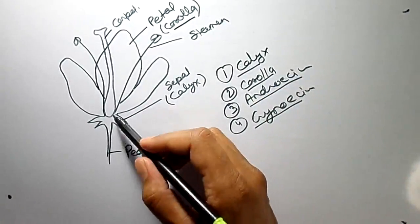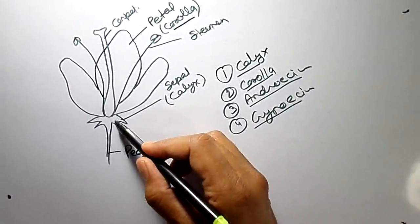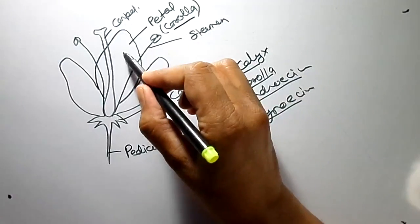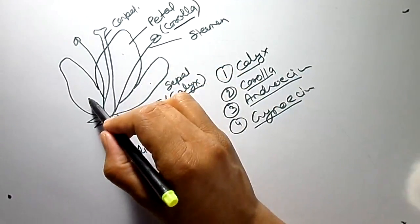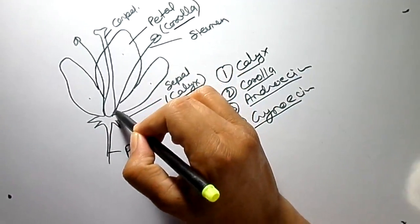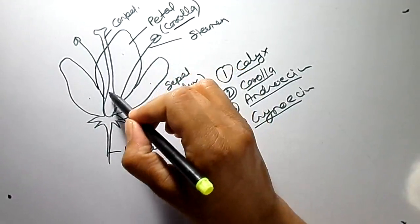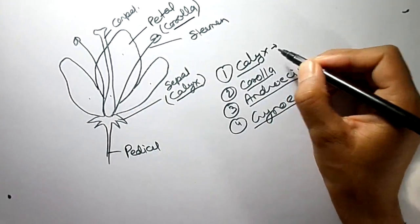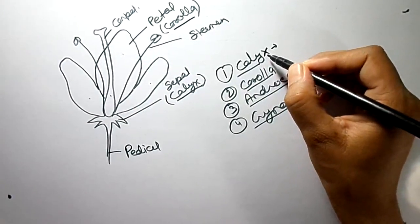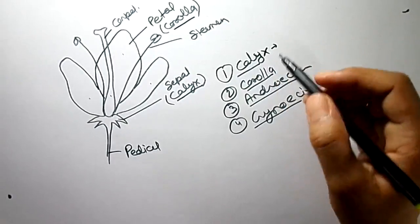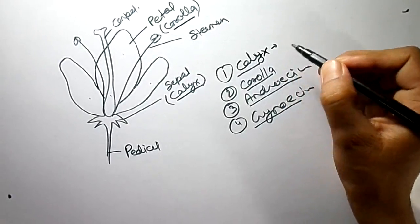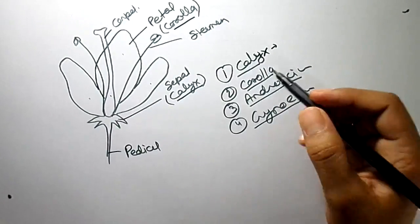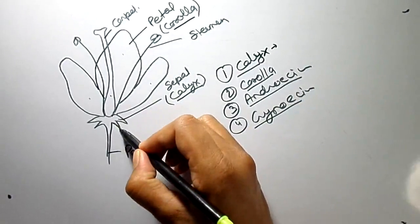So you can see here — this is Calyx. And these parts are called Corolla. This is Androsium. And this one is Gynosium. So the first one is Calyx; Calyx is the first part of a flower and is basically green in color.